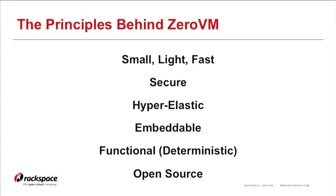The first principle is being small, light, and fast. The ZeroVM executable is only about 75 kilobytes of code, so it's very small. You can start a ZeroVM instance in as little as five milliseconds. There is an upfront validation process, but you can pre-validate code that's going to execute inside the ZeroVM execution environment. Once it's been pre-validated, you're basically running at native performance — there's no overhead sitting between your code and the hardware it's running on.